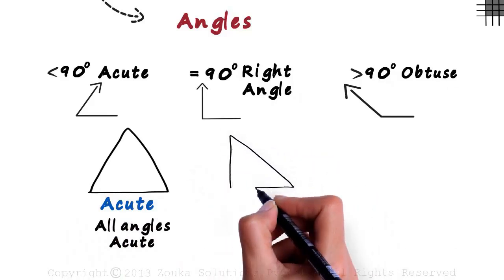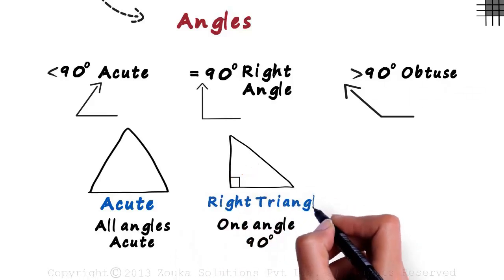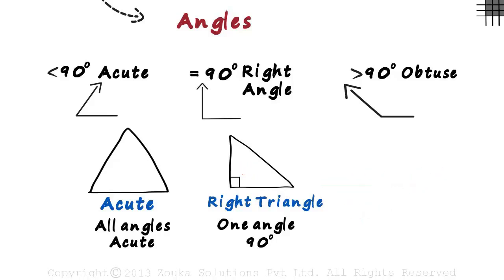Now look at this triangle. This angle here is a right angle. If one angle in a triangle is a right angle, then it's called a right triangle. It's also referred to as a right angled triangle. Remember, just one angle has to be a right angle for the triangle to be a right triangle. Can we have two right angles in a triangle? Try making one in your notebook and you will get your answer.